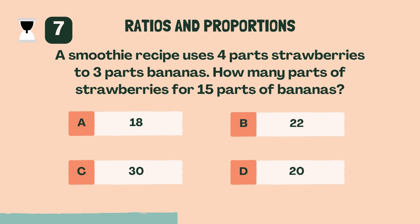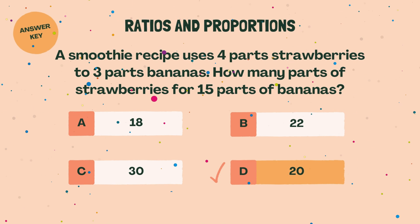A smoothie recipe uses 4 part strawberries to 3 parts bananas. How many parts of strawberries for 15 parts of bananas? D, 20.